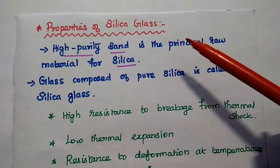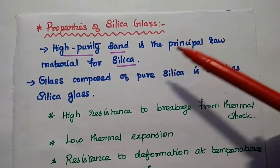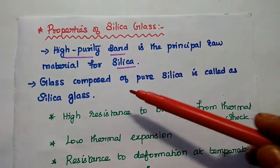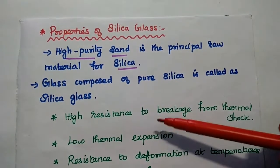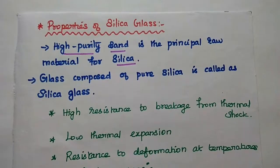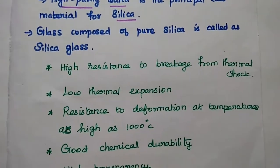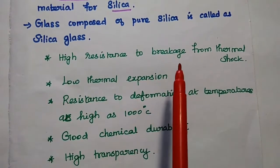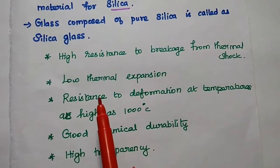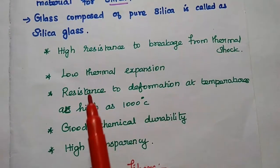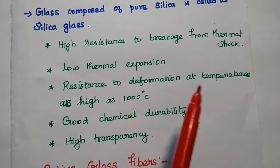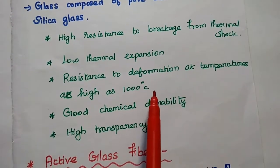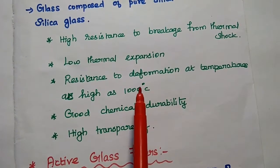Next, properties of silica glass. High purity sand is the principal raw material for silica. The glass which is composed of pure silica is called silica glass. It has major advantages or properties. The first one is high resistance to breakage from thermal shock. It has low thermal expansion, resistance to deformation at temperature as high as 1000 degrees centigrade.